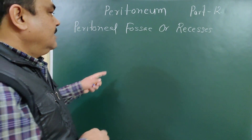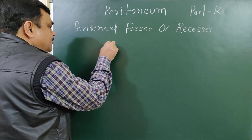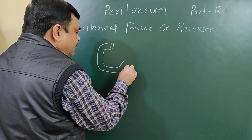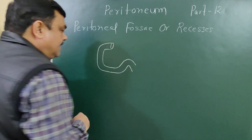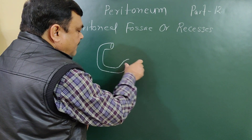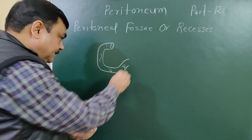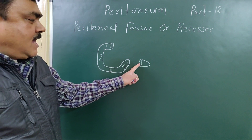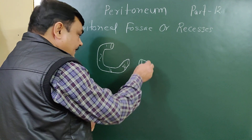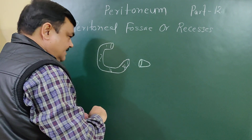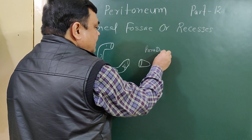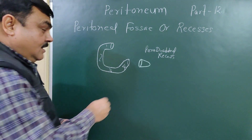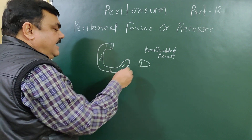Now we'll discuss the duodenal recesses. This is the duodenum — first part, second part, third part, and fourth part, and the duodenojejunal junction. In relation to the fourth part of the duodenum, one recess lies on the right side — this is the paraduodenal recess. It opens on the right side.